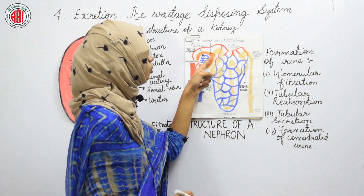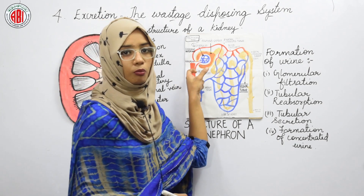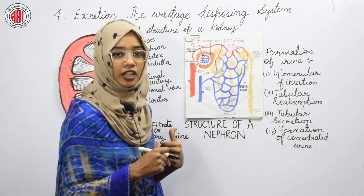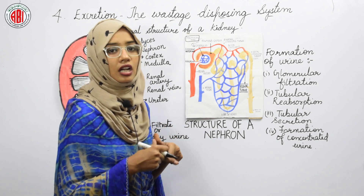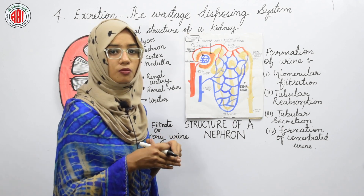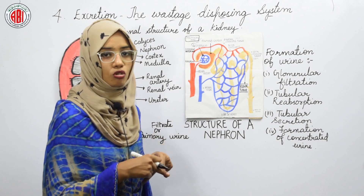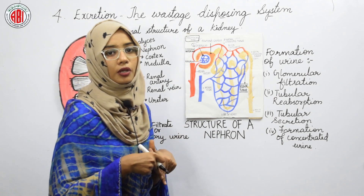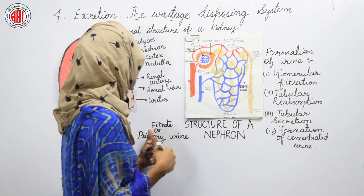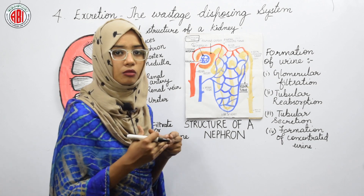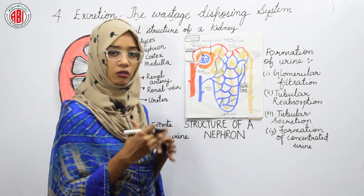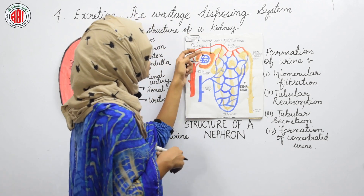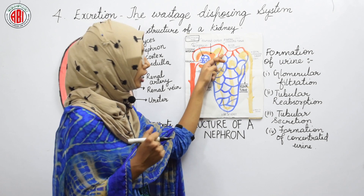This primary urine or filtrate reaches the Bowman's capsule. It is called primary urine because the filtrate contains some useful products along with waste products — useful materials that need to be absorbed later in the renal tubule. The primary urine looks almost like blood except it lacks blood cells, so we cannot call it pure urine. It then moves to the proximal convoluted tubule, the first part of the renal tubule.